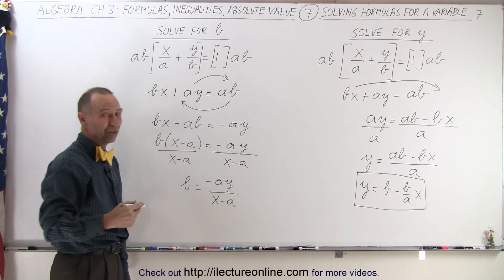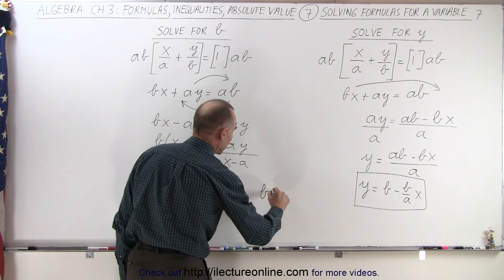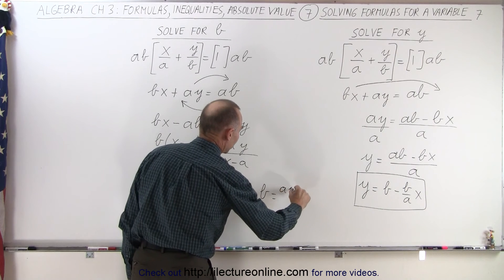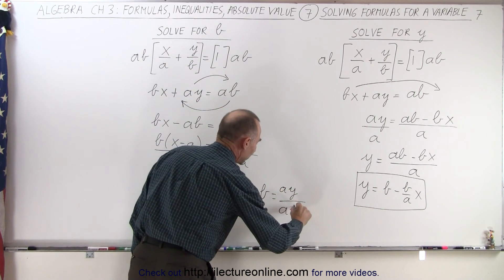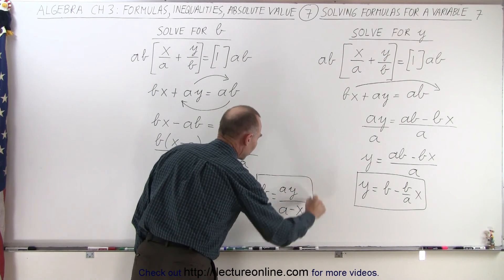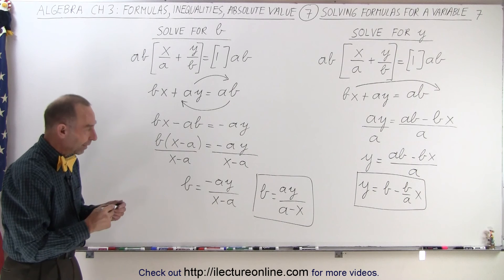You could potentially write it like this, by multiplying both the top and bottom by negative, so we could write this as b equals a times y, divided by a minus x, and so since it doesn't have a negative in the numerator, that is often the most preferred way to write the final answer.